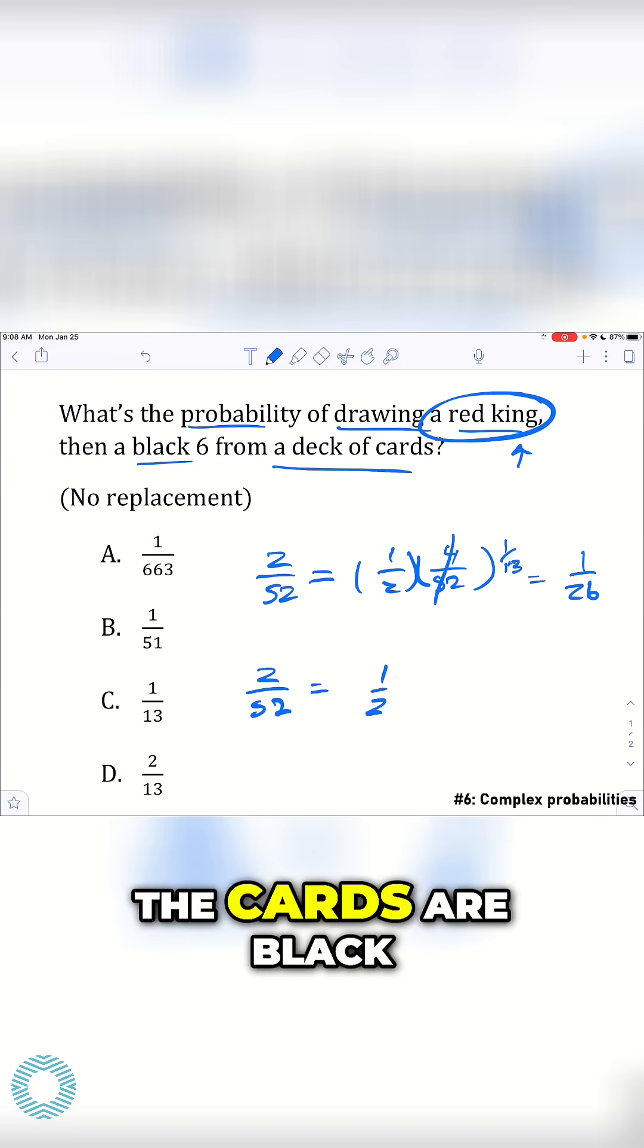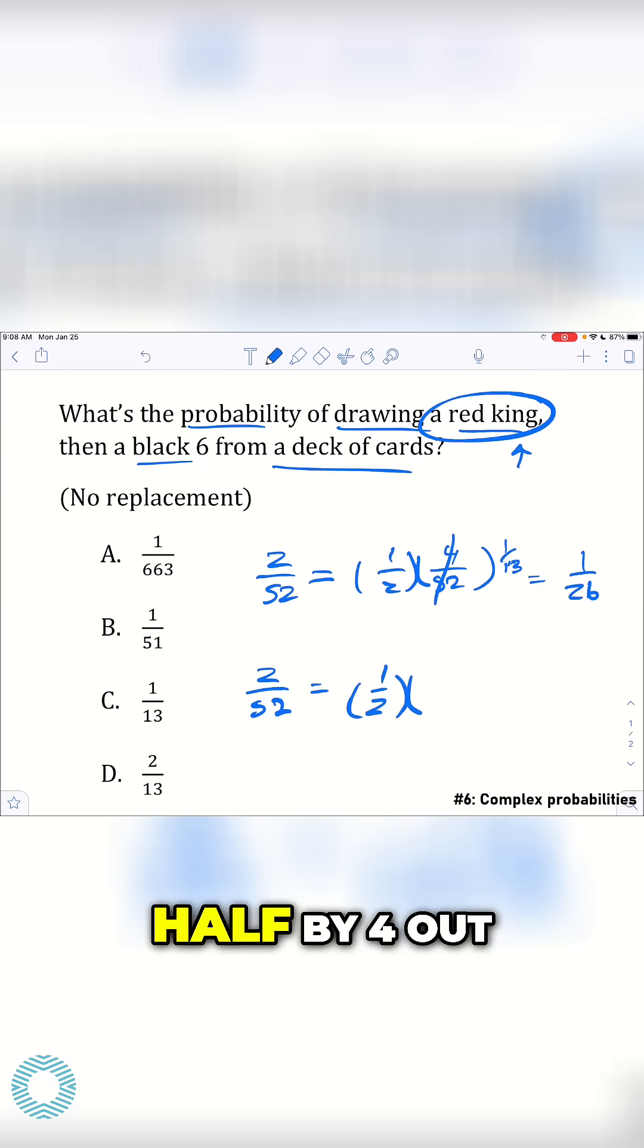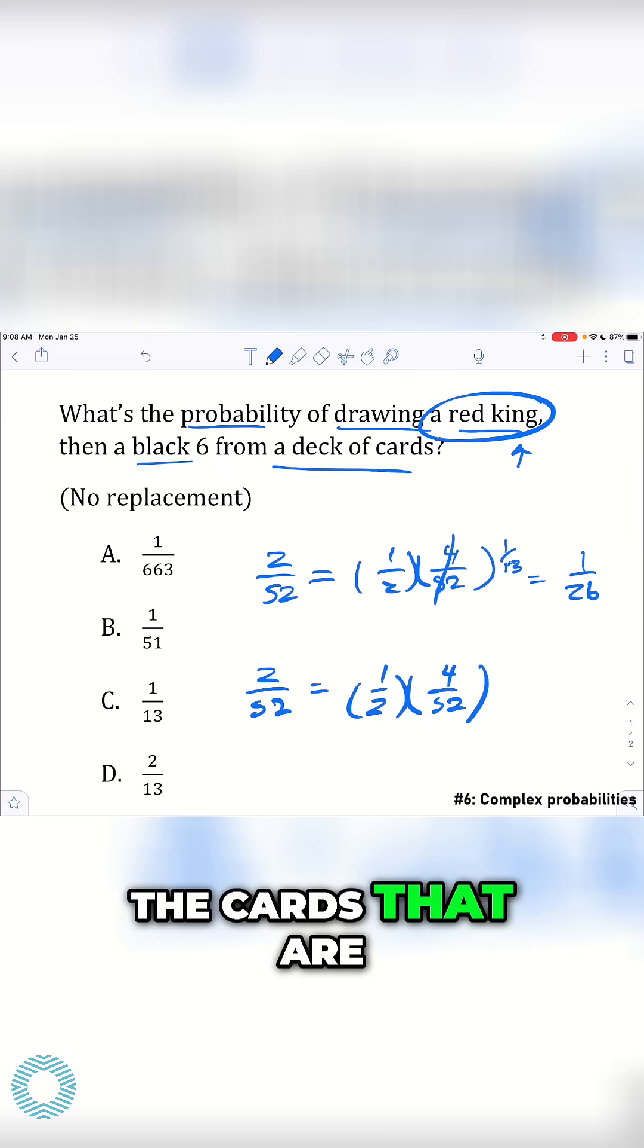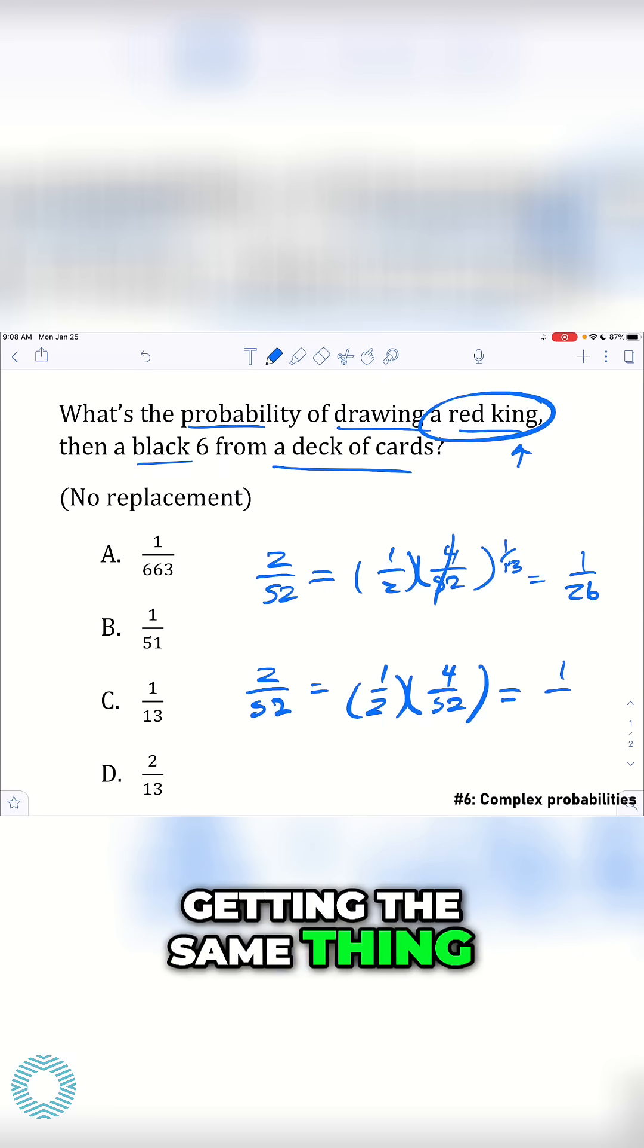And that's because half the cards are black. So you can multiply half by 4 out of 52, the cards that are a 6. And you end up getting the same thing, 1 out of 26.